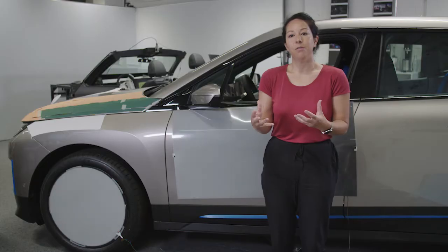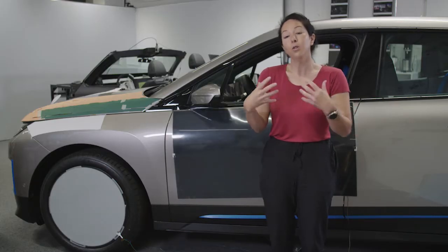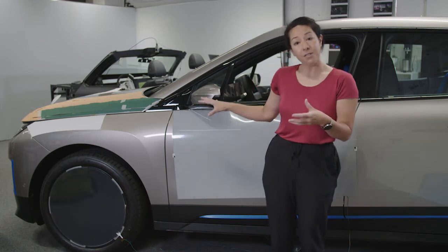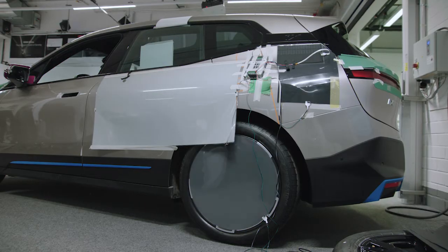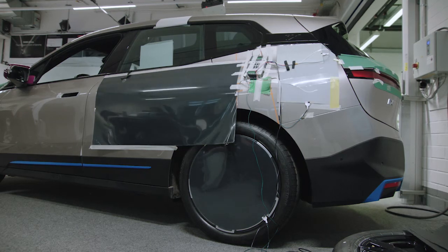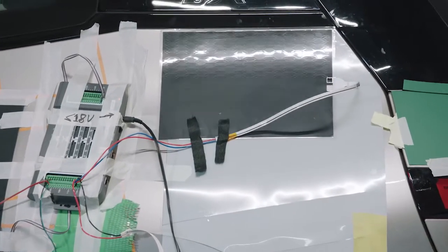Secondly, information. E-ink could help us portray useful information externally. The status of the battery, or if you can't find your car, we can make the car flash. And then you see it in your peripheral vision and you know where to go.